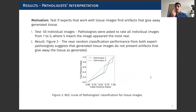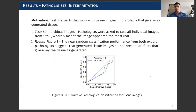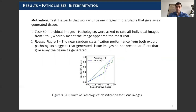Additionally, we tested the quality of the images with pathologists. The motivation is that pathologists are experts at working with tissue images, and they will be able to find out the artifacts in the tissue that would give them away as generated. We tested these images with 50 individual images, asking the pathologists to rate from one to five, five being the most real. What you can see in this figure is the AUROC curve performance of the pathologists. Their performance is really close to random classification, which means they are not able to differentiate between real and fake.